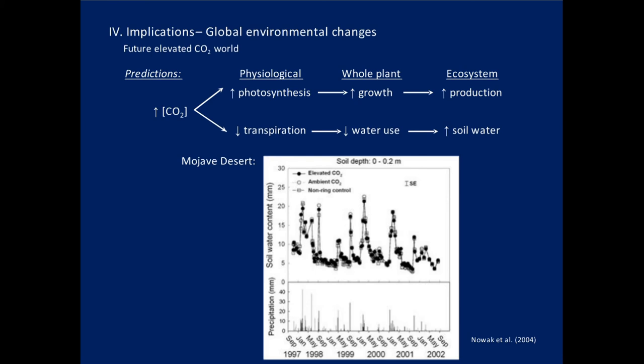But in arid-type ecosystems we see a different scenario. Looking at elevated CO2 plots, ambient CO2 plots, and control plots, you essentially cannot see a difference — there is no change in soil water content between elevated and ambient CO2 in arid systems. This conservation of water that occurs in mesic systems does not occur here. Why? Increased growth can increase the amount of tissues that are respiring, which then increases water use. In arid systems, these two factors — increased growth leading to increased water use, and elevated CO2 leading to decreased water use at the leaf level — tend to balance each other out, resulting in no change in soil water content or ecosystem water use under elevated CO2.